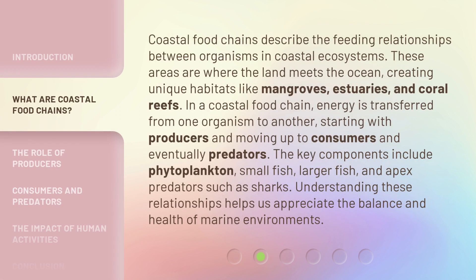Coastal food chains describe the feeding relationships between organisms in coastal ecosystems. These areas are where the land meets the ocean, creating unique habitats like mangroves, estuaries, and coral reefs. In a coastal food chain, energy is transferred from one organism to another, starting with producers and moving up to consumers and eventually predators.